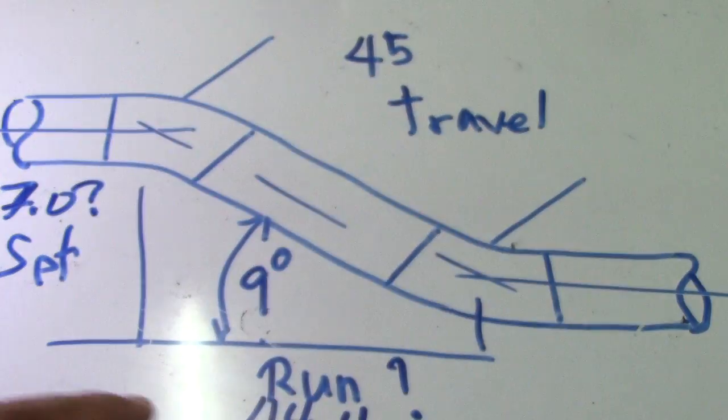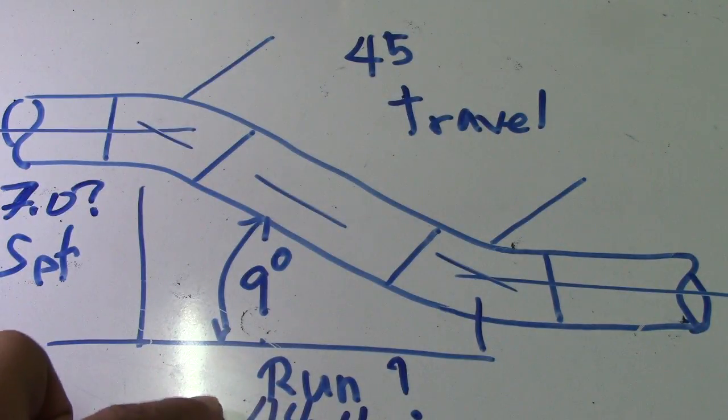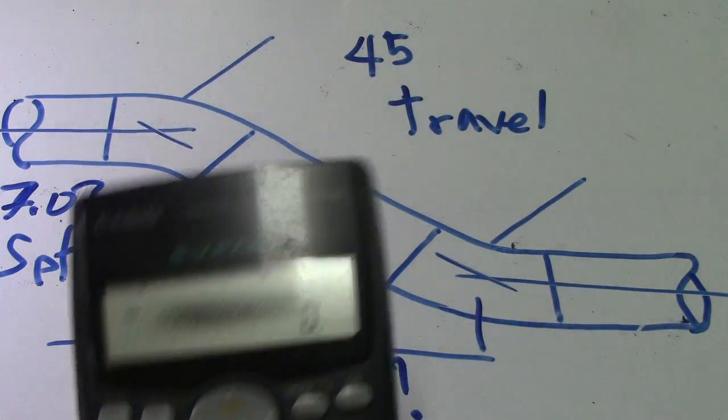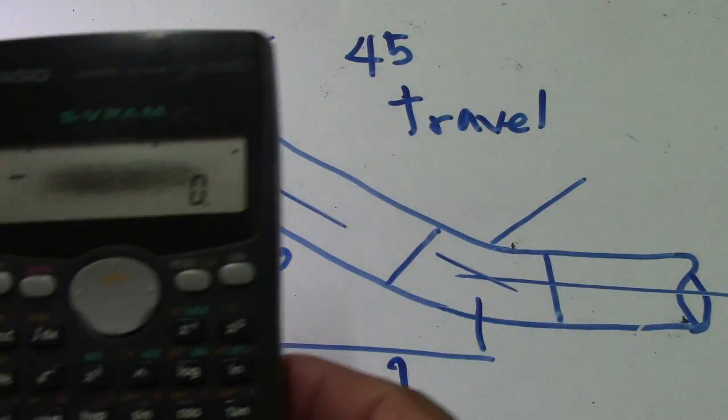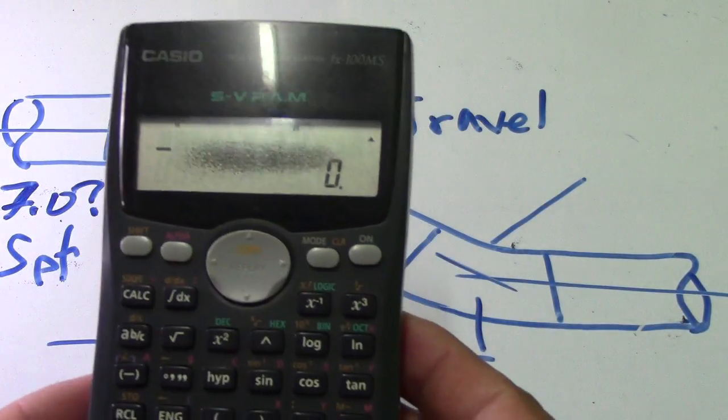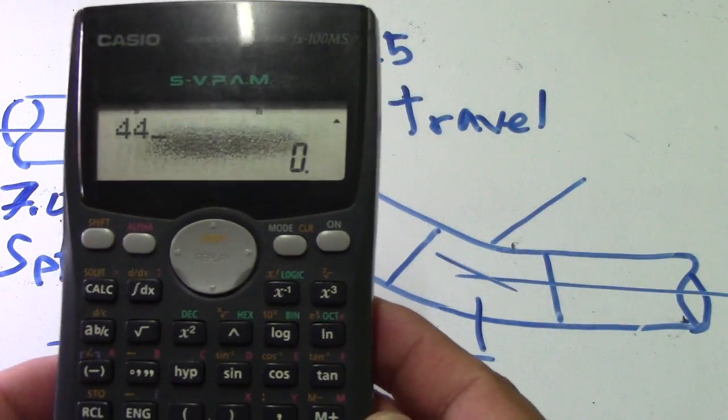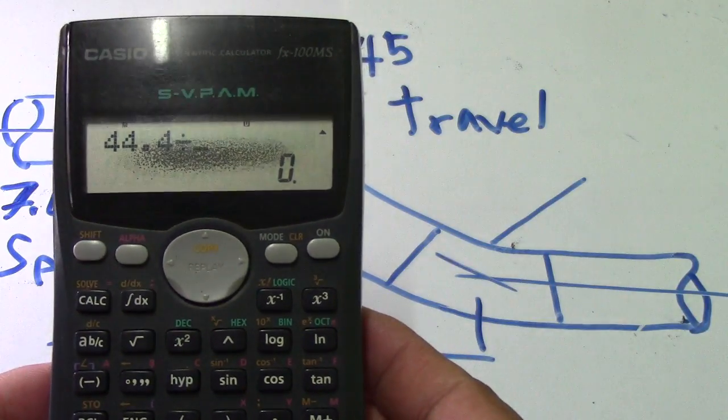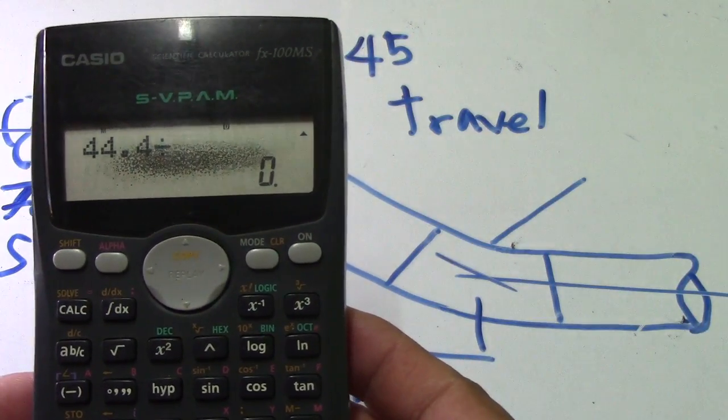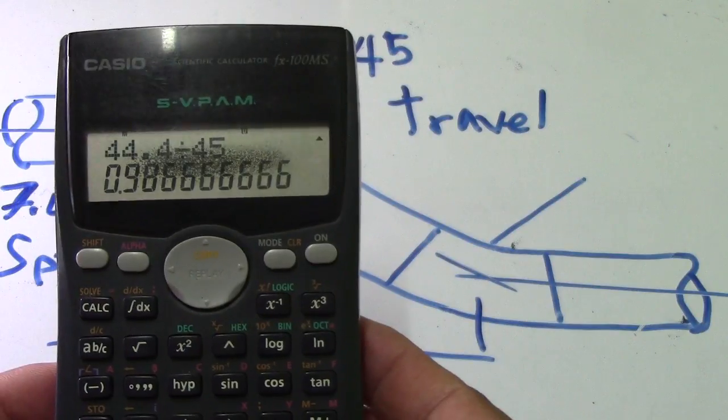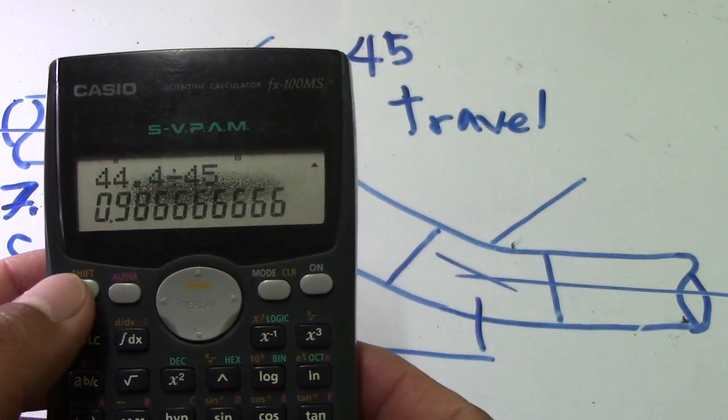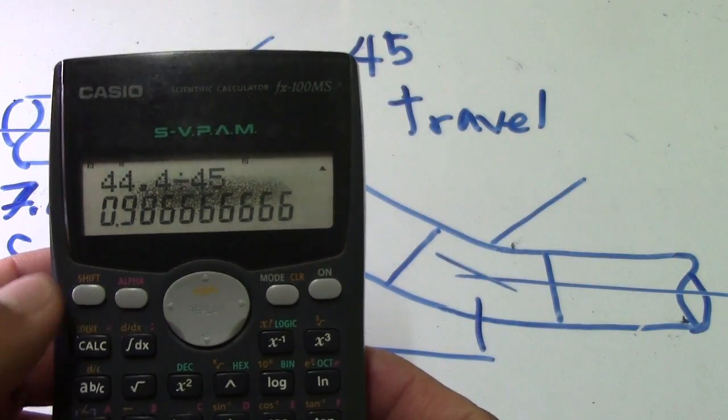Now we will use the run. We will verify the 9 degrees again by dividing 44.4 by the travel 45. Press shift and cosine.